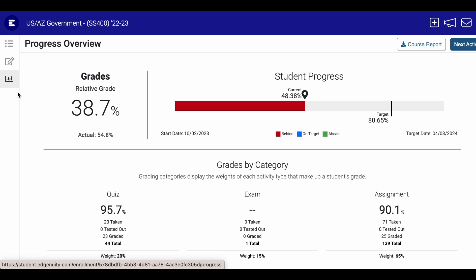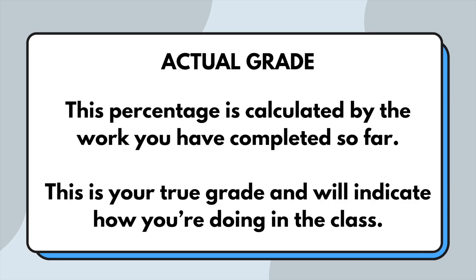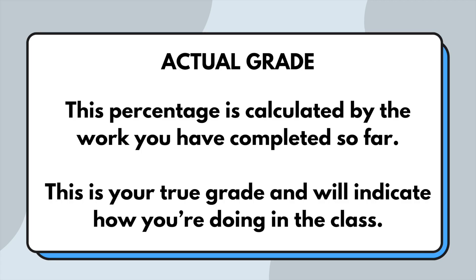There are a few things to take a look at on this page. First, let's review your actual grade. This percentage is calculated by the work you have completed so far. This is your true grade and will indicate how you're doing in the class.